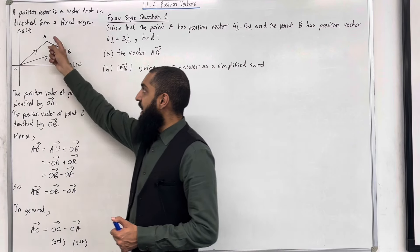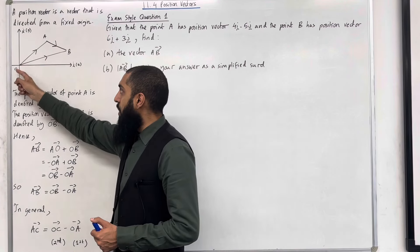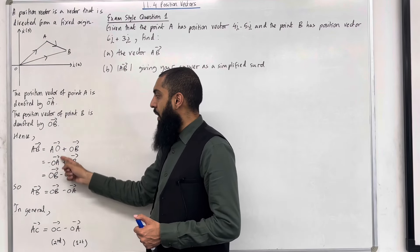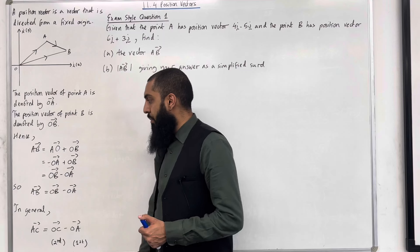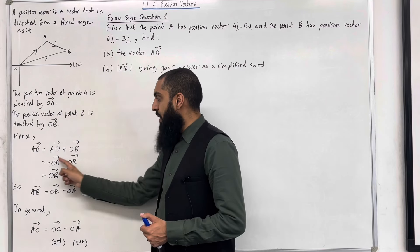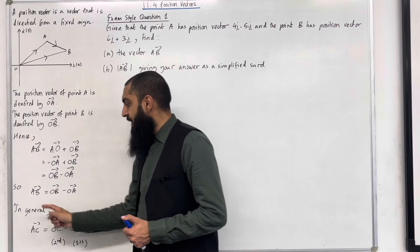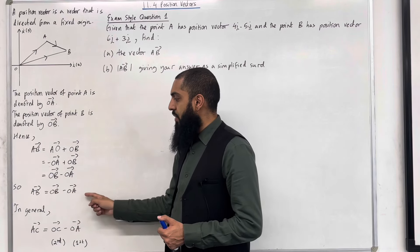Now A to O is basically going in the opposite direction of O to A. So A to O is equivalent to writing minus O to A plus your O to B. Now we can swap these two terms and we can rewrite it as O to B minus O to A. So the vector A to B is given by O to B minus O to A.